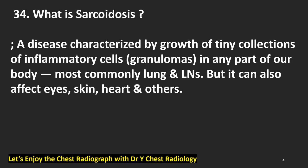What is sarcoidosis? The definition is a disease characterized by growth of tiny collections of inflammatory cells — in other words, granulomas — in any part of the body, most commonly the lung and lymph nodes, but it can also affect eyes, skin, heart, and others.